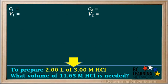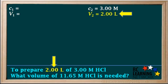In this problem, we can consider the final solution as the 2 liters of 3 M HCl. So the final concentration, C2, is equal to 3 M, and the final volume, V2, equals 2 liters.